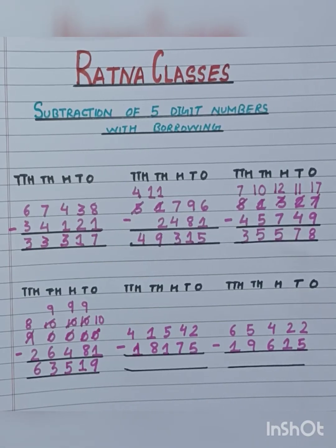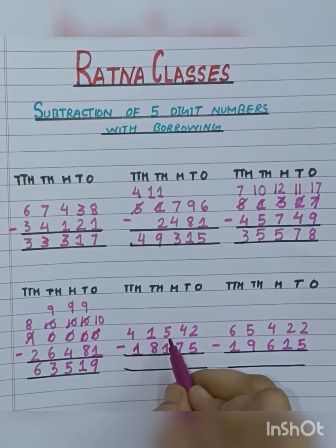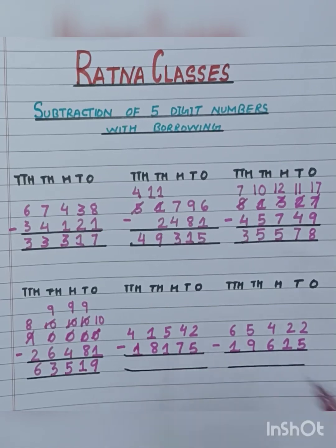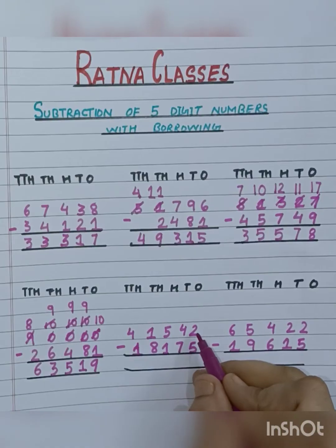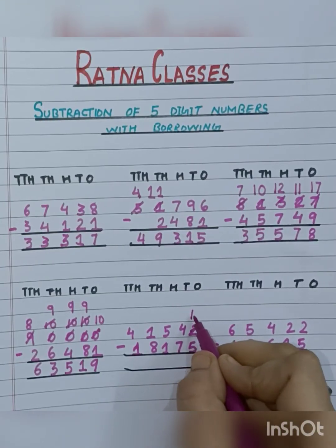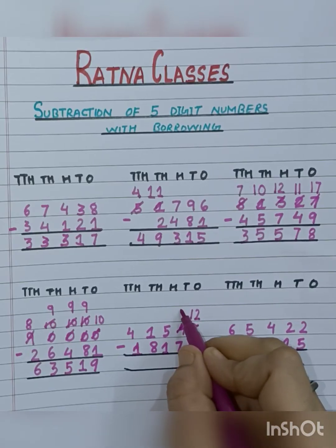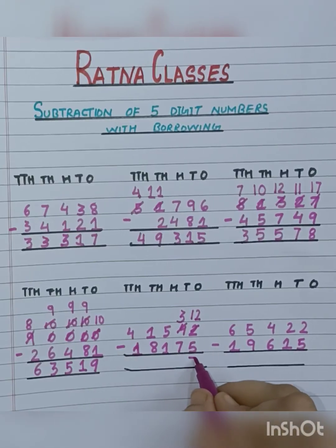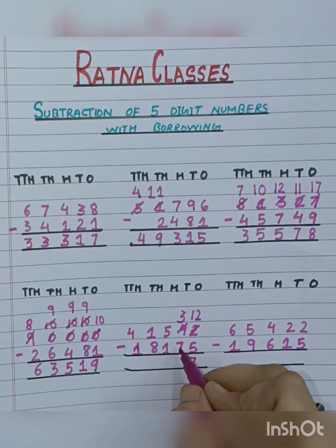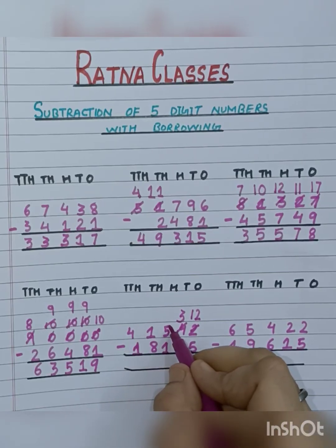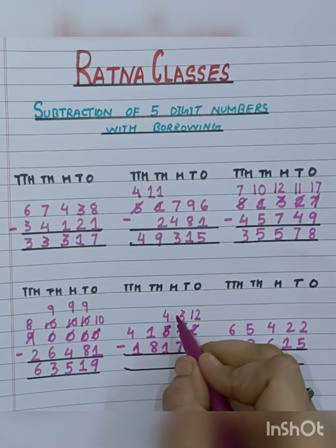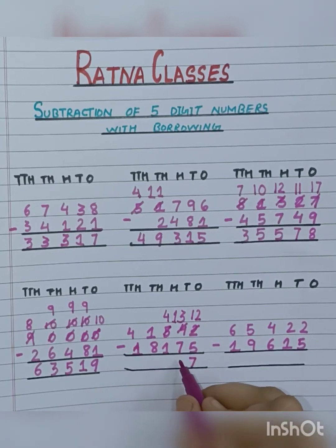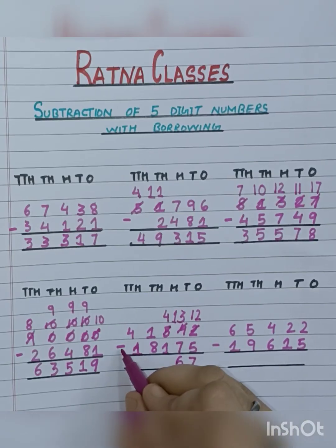Now let's move to the next sum: 41,542 minus 18,175. We can't subtract 5 from 2, so we will take borrow. So 2 will become 12 and 4 will become 3. Now 12 minus 5 is 7. Again we can't subtract 7 from 3, so we will take borrow from the 100's place. So 5 will become 4 and 3 will become 13. Now 13 minus 7 is 6. 4 minus 1 — can we subtract 1 from 4? Yes, because 4 is a bigger number, so we can subtract. 4 minus 1 is 3.